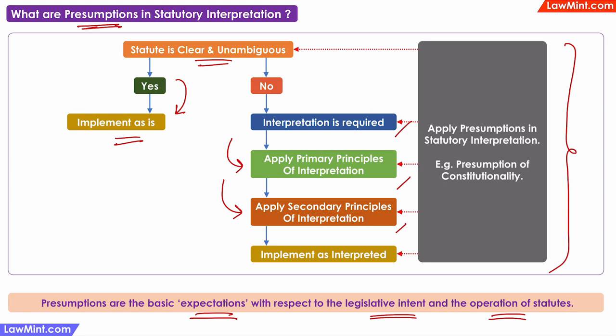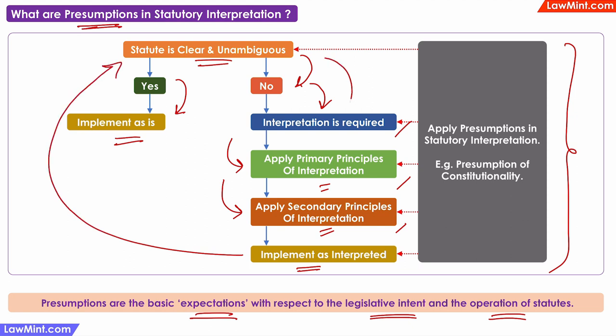For example, there is the presumption of constitutionality — the presumption that the legislature would not have intentionally created statutes to violate the constitution. If a statute's literal text appears to violate the constitution, interpretation is required. When primary or secondary principles yield multiple possible interpretations, any version that violates the constitution should be discarded. Even while implementing a statute, if there is a constitutional violation, the court must go back and reinterpret it.